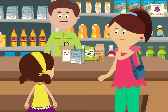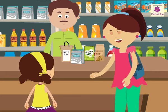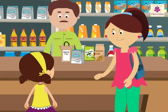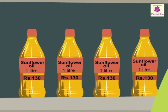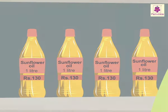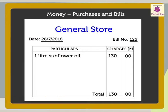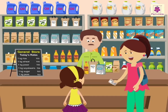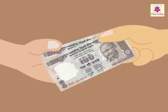Oh, I forgot — we also had to buy sunflower oil for cooking. Let's buy one litre of sunflower oil. As per the bill given by the shopkeeper, we have to pay rupees one hundred and thirty. I am giving him two hundred rupees.